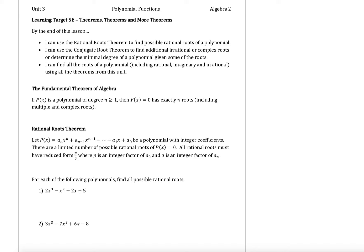By the end of this lesson, you will be able to use the rational roots theorem to find the possible rational roots of a polynomial. You will be able to use the conjugate root theorem to find any additional irrational or complex roots, or determine the minimal degree of a polynomial given some of those roots. Lastly, we'll be able to find all the roots of a polynomial, including the rational, imaginary, and irrational roots using all the theorems from this unit.